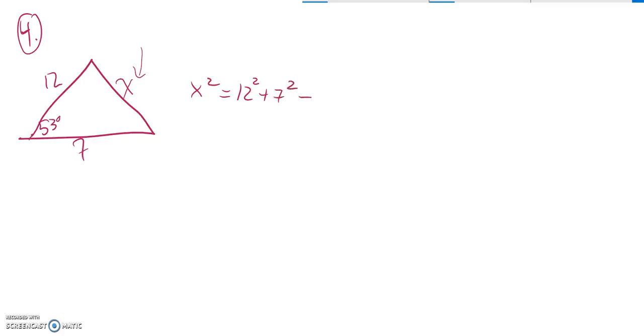And then it's minus a little correction because I don't have a right angle going on here. So two times those other two sides multiplied by the cosine of the angle that's between them.